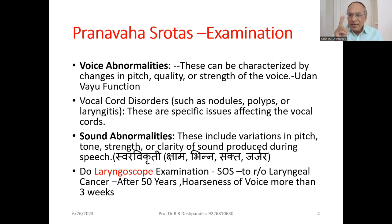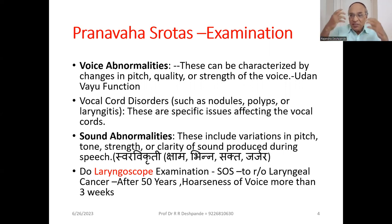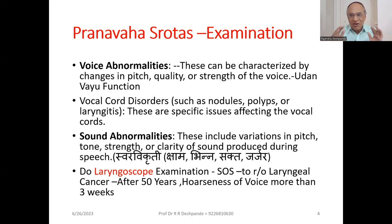In Prana Vaha Srotas, two Vata subtypes act: Prana Vayu and Udana Vayu. Prana Vayu is one of five types of Vata Dosha: Prana, Udana, Vyana, Samana, Apana. This Prana Vayu is not only oxygen — it represents nervous and brain control on the respiratory system, specifically the respiratory center in the brain. Prana Vayu activity drives inspiration — taking breath inward. Udana Vayu is antagonistic, moving from inside to outside. The functions of Udana Vayu include Vak Pravritti (speech), Prayatna (effort), Urja (energy), Bala (strength), Varna (complexion), and Smriti Kriya (memory).